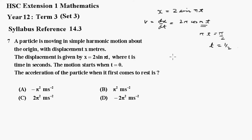Differentiating again to find the acceleration. So d squared x dt squared, acceleration, is equal to minus 2 pi squared sine pi t.